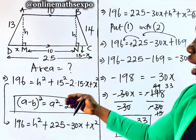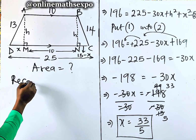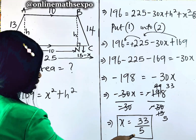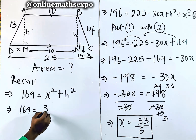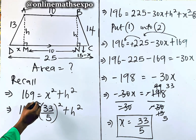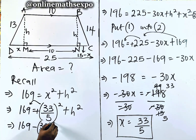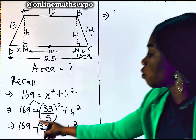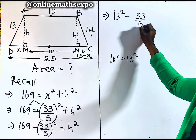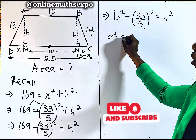With x equals 33/5, we go back to equation 1 to find the height: 169 equals (33/5) squared plus h squared. Rearranging: h squared equals 169 minus (33/5) squared, which is 13 squared minus (33/5) squared.